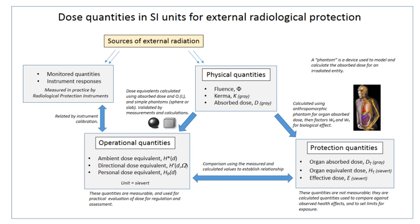When alpha particle-emitting isotopes are ingested, they are far more dangerous than their half-life or decay rate would suggest, due to the high relative biological effectiveness of alpha radiation to cause biological damage after entering living cells. Ingested alpha-emitter radioisotopes such as transuranics or actinides are on average about 20 times more dangerous, and in some experiments up to 1,000 times more dangerous than an equivalent activity of beta-emitting or gamma-emitting radioisotopes. If the radiation type is not known, it can be determined by differential measurements in the presence of electrical fields, magnetic fields, or varying amounts of shielding.